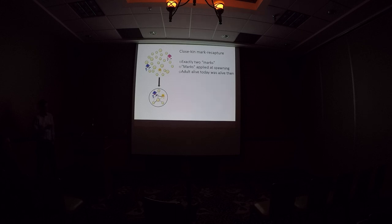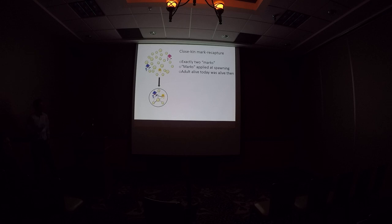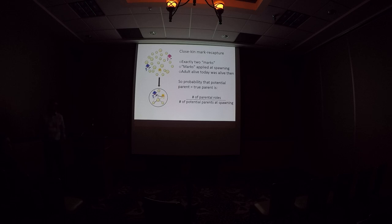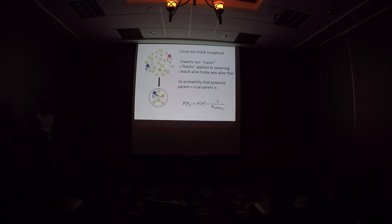To sum up: two marks are applied at spawning, so we're essentially capturing and recapturing at the time of spawning. Since we know that adults and juveniles we sampled today were also alive back then, we don't have to worry about mortality. The probability of any potential pair being a true pair is the number of parental roles (that's two) over the number of potential parents that could have filled those roles. That gives us this simple estimator: N = 2 × (number of juveniles in sample) × (number of potential parents) / (number of actual parent-offspring pairs observed).